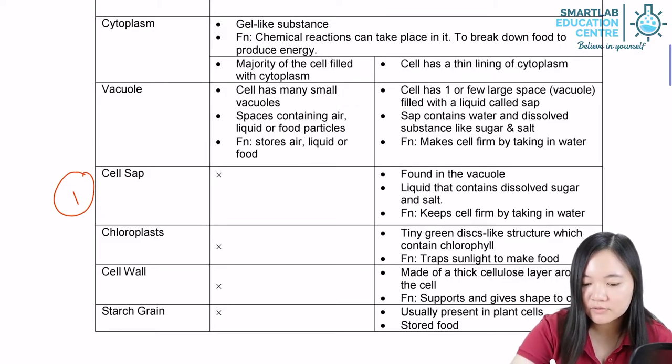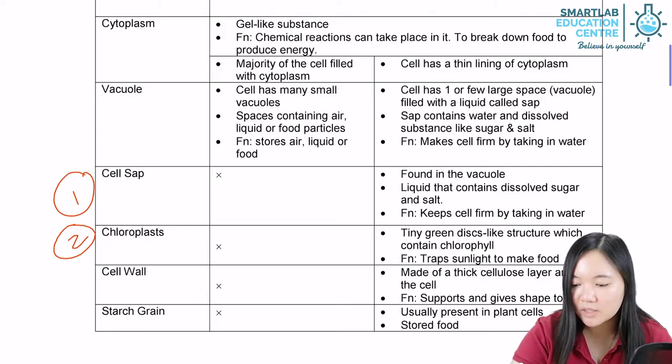Plant cells have chloroplasts. Animal cells do not have chloroplasts.